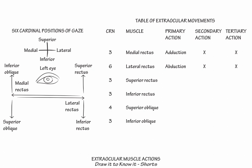In the next row, write that the superior rectus muscle's primary action is elevation, its secondary action is intorsion, and its tertiary action is adduction. Then write that the inferior rectus muscle's primary action is depression, its secondary action is extorsion, and its tertiary action is adduction.